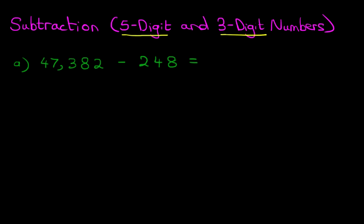Well, as we've now progressed to larger numbers, the vertical format is now going to come in handy. So let's rewrite this into nice neat columns. We've got 47,382 minus 248.